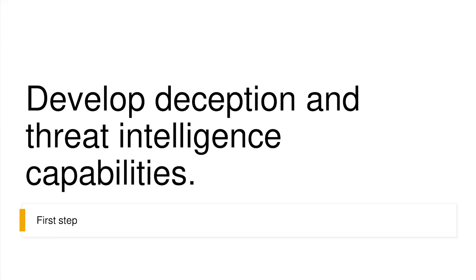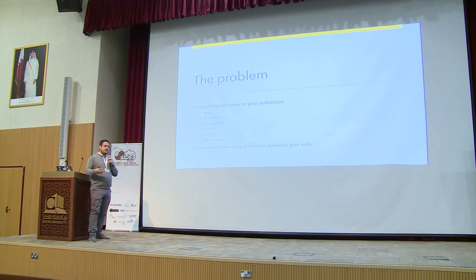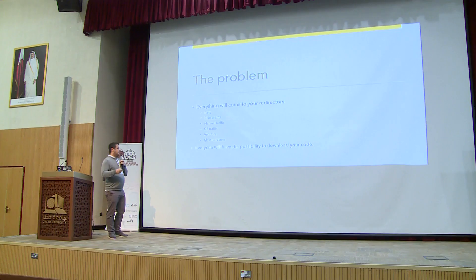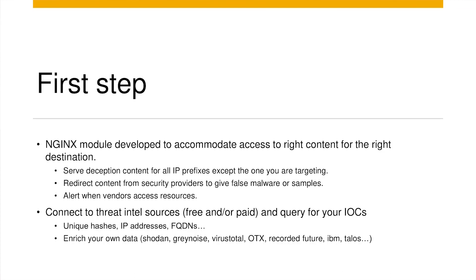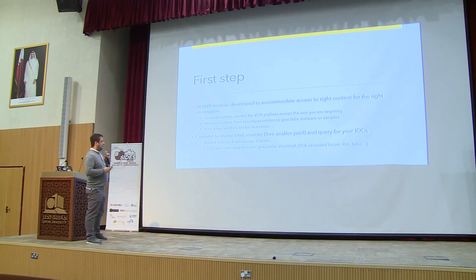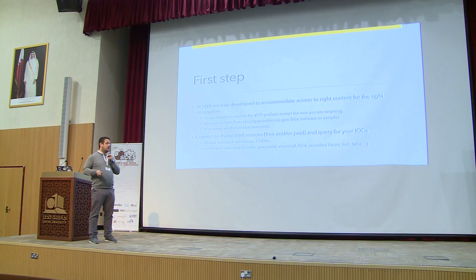The first step is to develop deception capabilities and offensive threat intelligence. Everything will come to your redirector, so you will have a lot of data — botnets will access it, blue teams will access your infrastructure, there'll be normal traffic, C2 traffic, security vendors will access it, malicious users will access it. Basically anyone can download your code. So I developed an NGINX module that allows me to serve the right content to the right target. I can serve false content to everyone except my own target. My own target will see the malicious code, while security providers get a welcome page or landing page, and my client downloads the original payload.